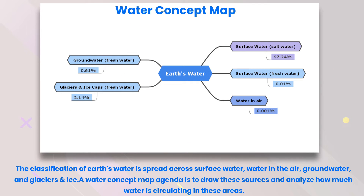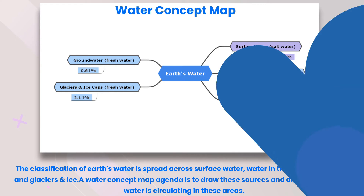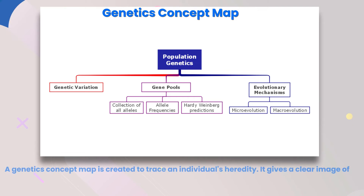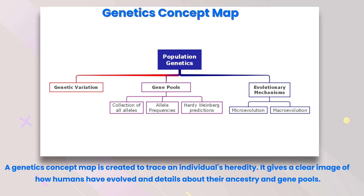The homeostasis concept map displays the balance of homeostasis and organ relationships. Water concept map: the classification of Earth's water is spread across surface water, water in the air, groundwater, and glaciers and ice. A water concept map draws these sources and analyzes how much water is circulating in these areas. Genetics concept map: a genetics concept map is created to trace an individual's heredity.